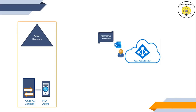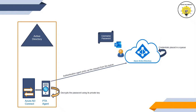The user will browse to outlook.office.com and will provide their username and password. As soon as the user clicks Sign In, Azure Active Directory will encrypt the password using the public key of the authentication agent, and will place the username and password in a queue. Then the on-premise authentication agent will retrieve the username and encrypted password from the queue, use its private key to decrypt the encrypted password, and will send the username and password to the domain controller for validation.